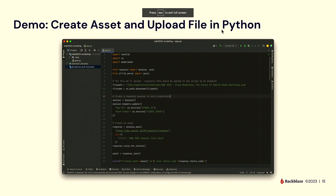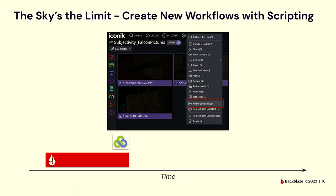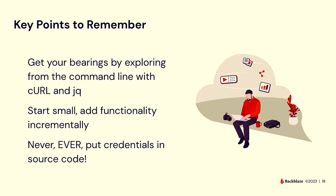The sky's the limit with this stuff. We wrote a plugin for Iconic that manages files between two different storages, and I'll be presenting on that later today. If you want to start exploring and creating your own automations and workflows, get started from the command line — curl and jq are really useful foundational tools and give you a real understanding of what's flowing back and forth. I showed you a script with about eight different operations, and I did not just type all those in at once — I typed in the first one, made sure it worked, typed in the second one, made sure it worked. Always start small, get something working, and then iterate.